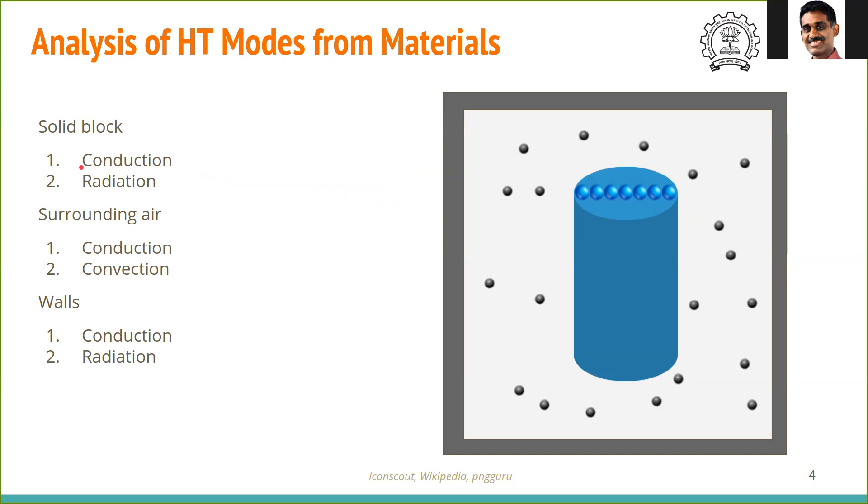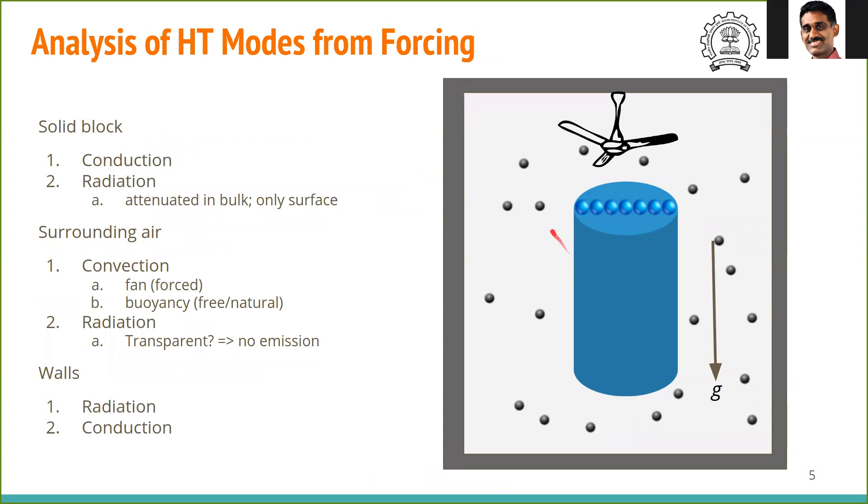As a thumb rule, in a solid block, you always have conduction and radiation inside the solid block. In the surrounding air, you will have convection and conduction because it is a fluid. And the walls here directly don't contribute by conduction or convection, but by radiation, it can heat the surface or cool the surface. Additionally, suppose if you have a fan on the top which is moving the fluid around, the surrounding air can also have fan and buoyancy-driven convection. Think of whether there is gravity present. If gravity is not present, obviously there is not going to be any buoyancy-driven convection. If gravity is present, then the density differences because of temperature variation can lead to buoyancy-driven convection.